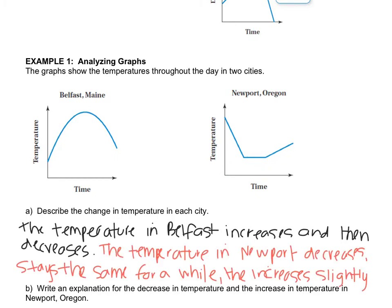We'll read you what I have about both cities. The temperature in Belfast increases and then decreases. That was pretty simple. And the temperature in Newport decreases, stays the same for a while, and then increases slightly. I'm differentiating between how high the temperature went because even though this went down and then this went up, it didn't make the same increase. It didn't go back up to where it started. That's why I just said that it increased slightly.